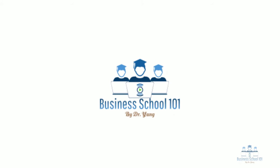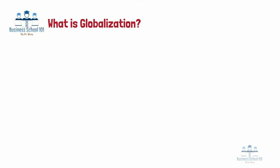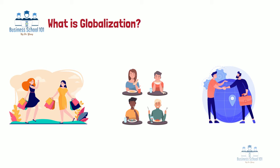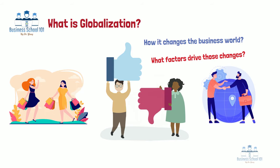Hello, everyone. Welcome to Business School 101. We live in an increasingly interconnected and interdependent world. Globalization touches every part of our lives, from the products we buy, to the food we eat, to the ways we communicate with one another. Globalization is also tied to some of the biggest issues we face in the modern era, including climate change, trade, terrorism, and the spread of deadly diseases. Being intertwined with countries and markets all over the world has both benefits and downsides, so globalization has both proponents and detractors. No matter which side you're on, globalization is simply a reality of modern life. Therefore, it's critical to understand what exactly globalization is, how it changes the business world, and what factors drive those changes. In this video, I hope to answer those questions.